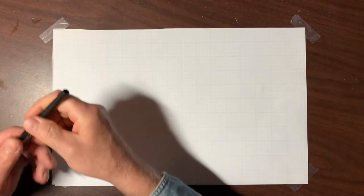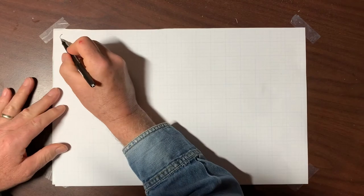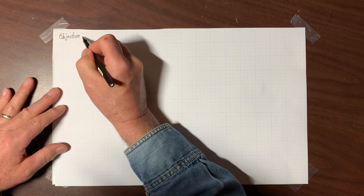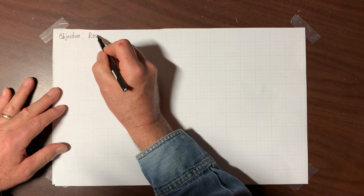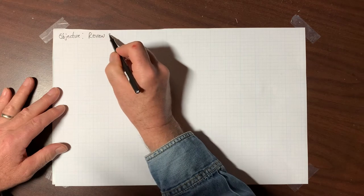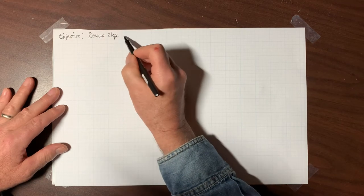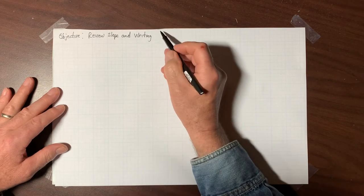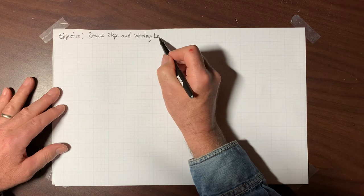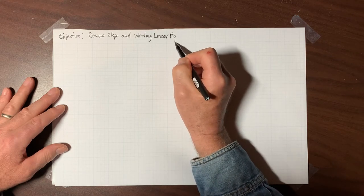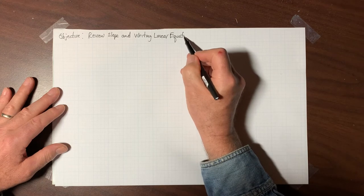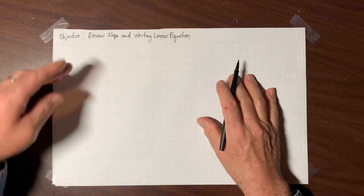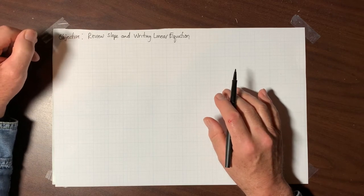Our objective is simply to review slope and writing the equation for a line — writing linear equations. When we're done, the intent is that you'll be able to find the slope of a line and write the equation for a line.